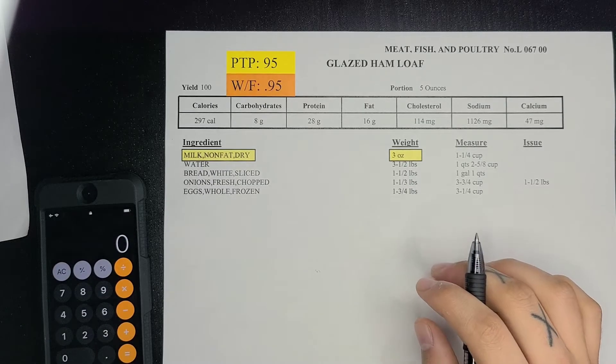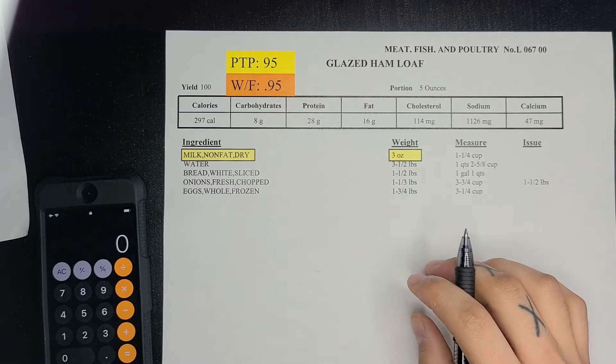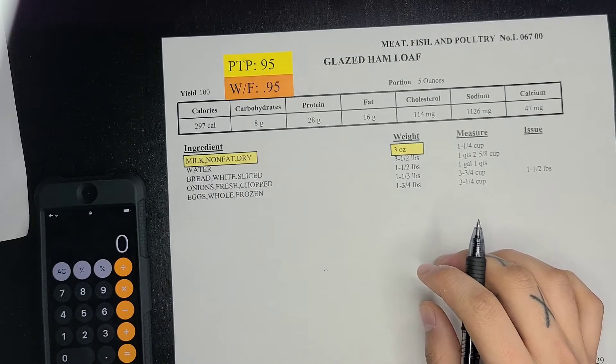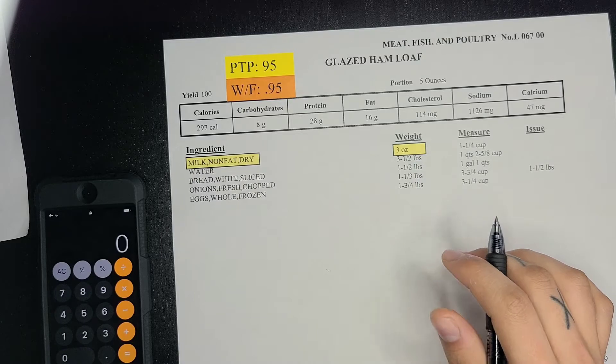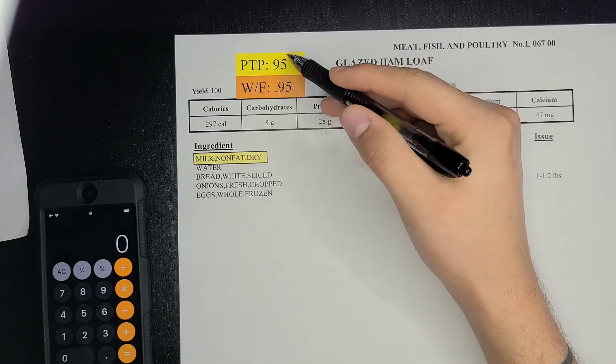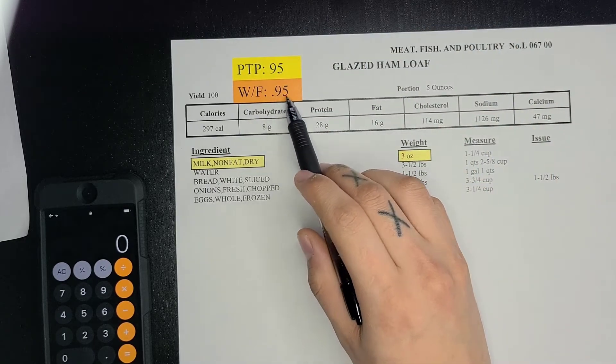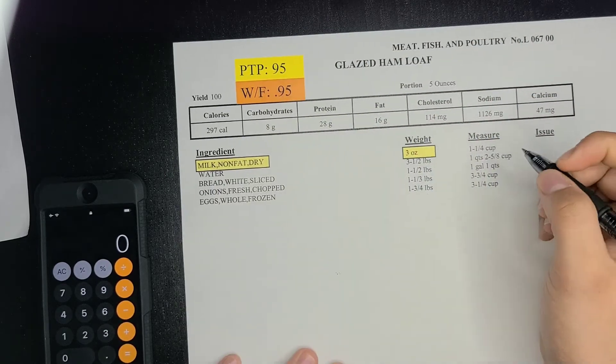Hey everyone, today we're going to be going over some recipe conversions using your yield adjustment formula. First things first, you always want to find your working factor, but in this case it's already there. All I did was divide their portions to prepare over 100 to get that 0.95. What you first want to do is multiply your working factor by all these ingredients.